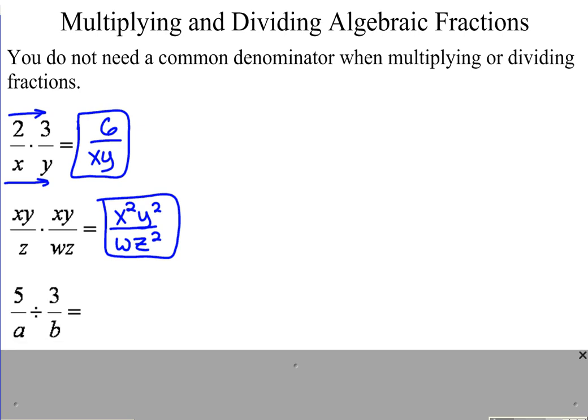Dividing fractions. We do not have to worry about common denominators, but every time we have a division problem, we're going to change it to a multiplication problem by taking the reciprocal of the second fraction. The first fraction stays the same. We change the division to multiplication, take the reciprocal of the second fraction, and now follow your rules for multiplying straight across the top, straight across the bottom. 5b over 3a.